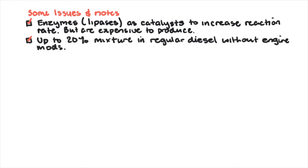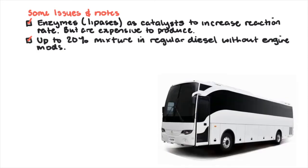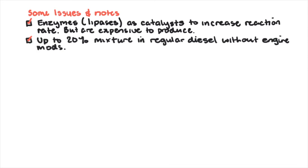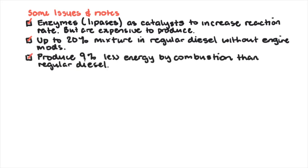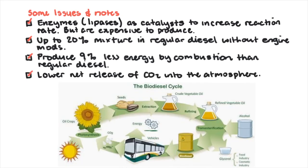At the moment, biodiesel of up to 20 percent mixture in regular diesel can be used by diesel engines without modification. You tend to see diesel engines in large vehicles like trucks and buses because of their high energy requirements. However, biodiesel does produce roughly nine percent less energy than petroleum diesel, as it's more difficult to undergo complete combustion. But on the plus side, the carbon dioxide released through its combustion has less impact, since the crops used to make the oil use CO2 from the atmosphere in the first place — almost like a slightly less vicious cycle.